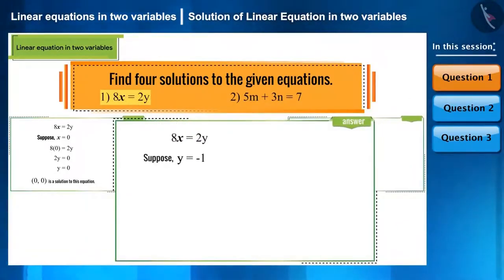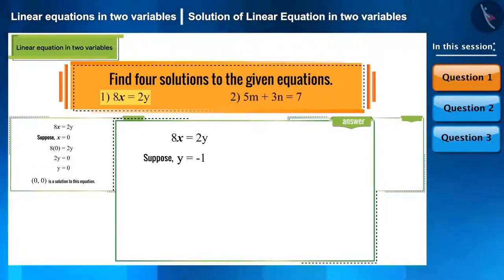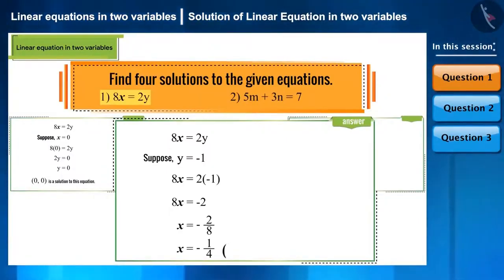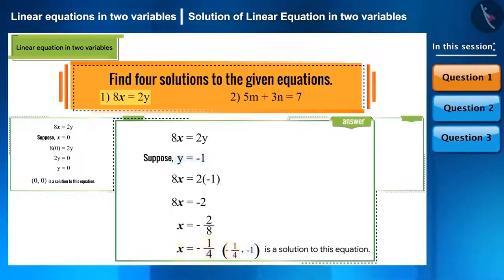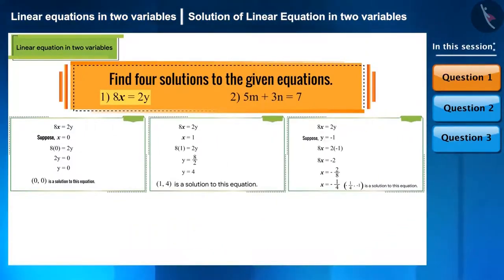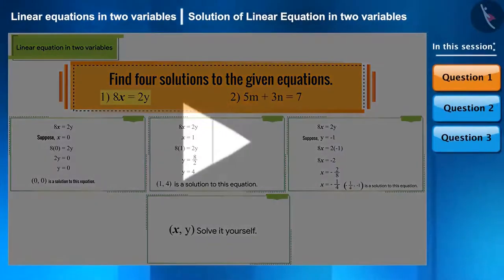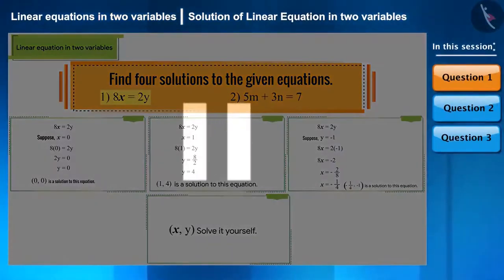Now, let's consider the value of y as minus 1 and substitute it in the equation to find the corresponding value of x. The value of x obtained is minus 1 by 4. Hence, (-1/4, -1) is another solution. So far, we have obtained three solutions to the given equation. Find the fourth solution by yourself — you can also pause the video to find the solution.